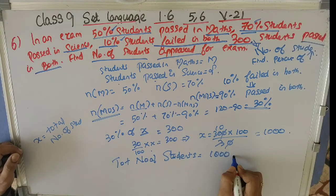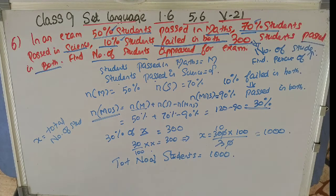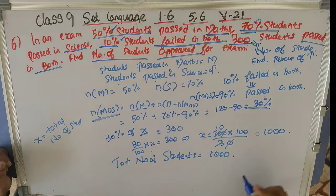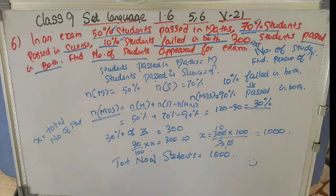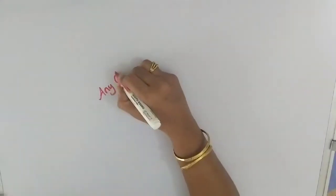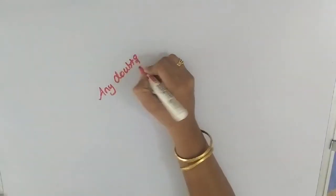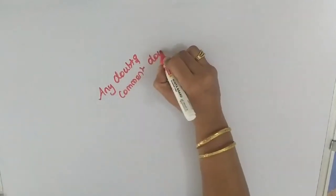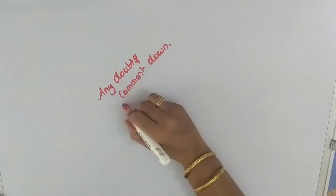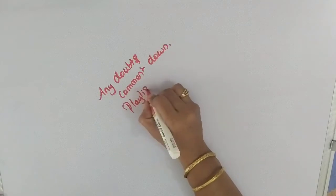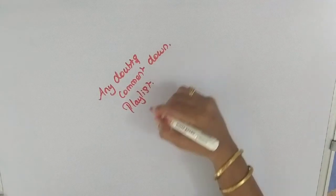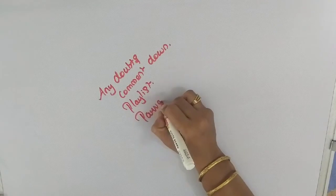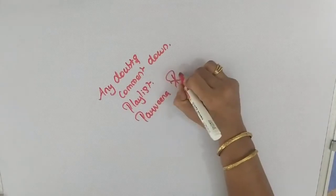The only numeral given was 300, and it is N of M union S. So we found N of M union S and then solved for X. If you have any doubts, please comment down and I will clear it for you. I have given the playlist in the description box — please make use of it. If you watch the full playlist, you can understand even better. Meet you all in the next video.